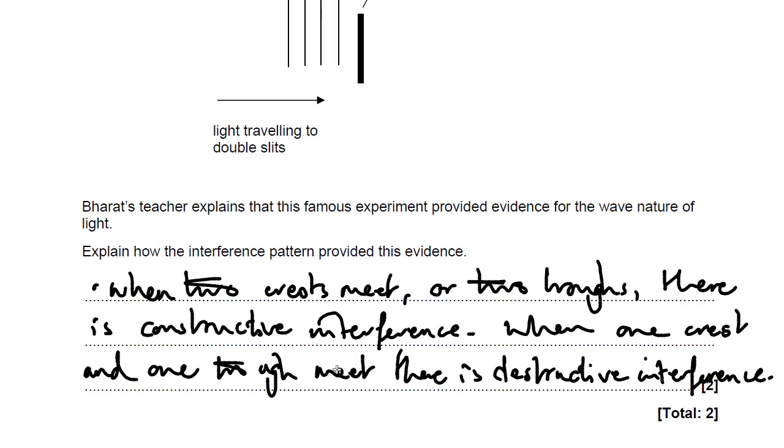You can't explain that with particles. If two particles meet, they'll just bounce off each other. They won't interfere with each other. So that's the second part of the answer here. You cannot explain this with particles. Okay, so that's why it's evidence for wave nature of light.